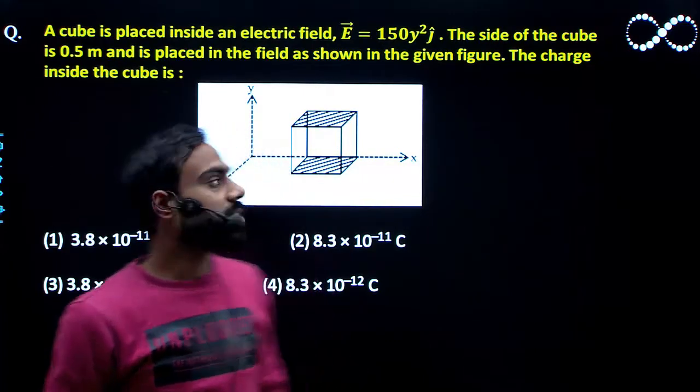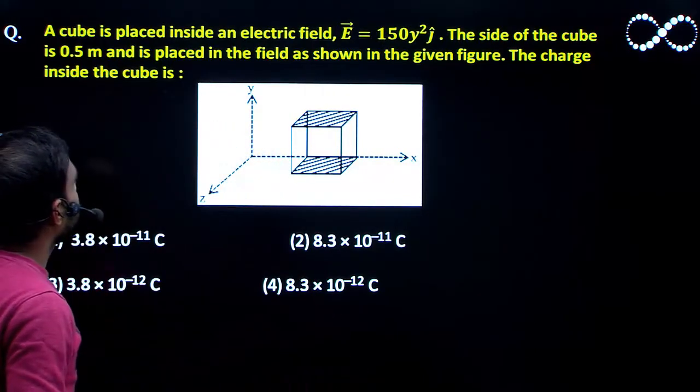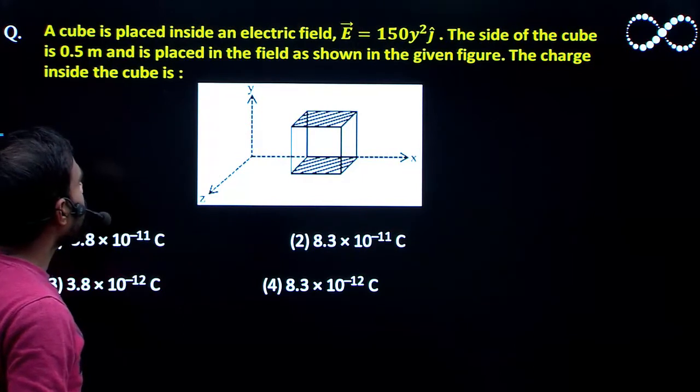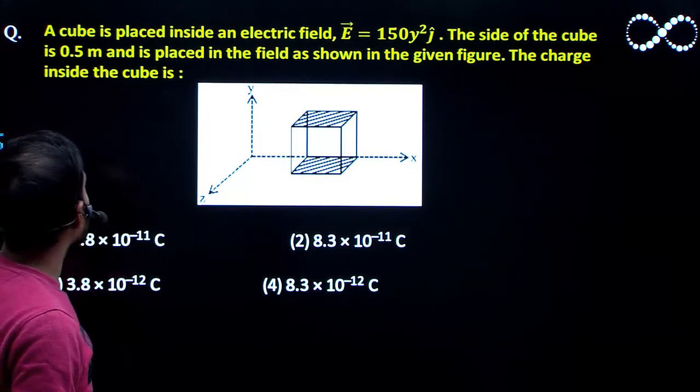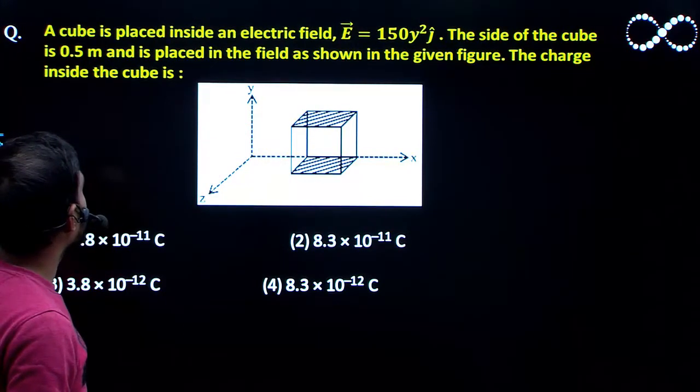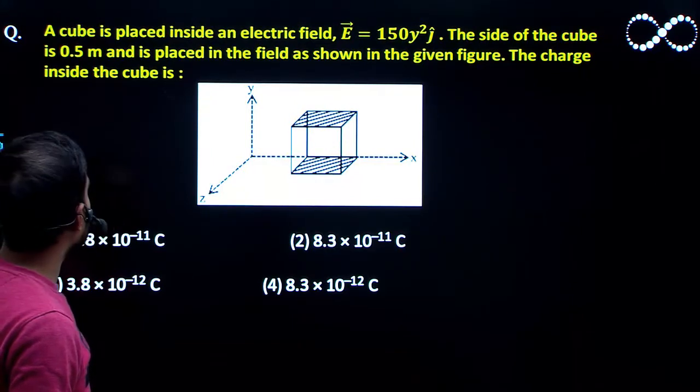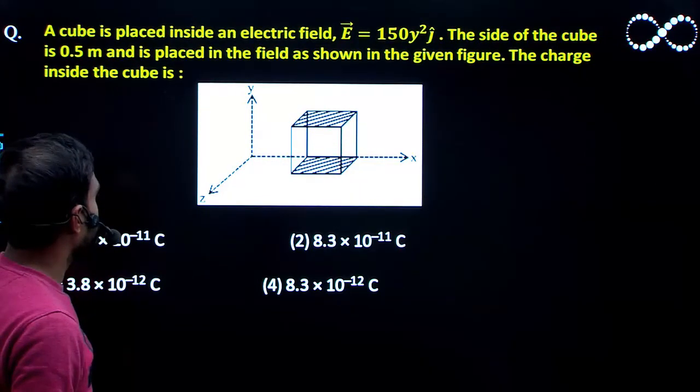Hello students. Let us see this question here. A cube is placed inside an electric field. E vector is given here. The side of the cube is 0.5 meter and is placed in the field as shown in the given figure. The charge inside the cube is what we're finding.